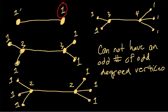In the first one we had two — an even number of odd-degree vertices. Then we had six — another even number of odd-degree vertices. And then we had six again — again an even number of odd-degree vertices.